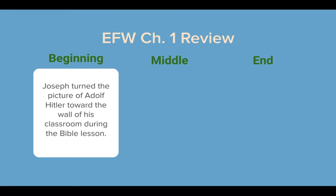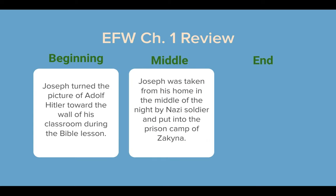Remember somebody turned him in, and that's what led to what happened in the middle of the chapter — that's when the stormtroopers broke into his home in the middle of the night and dragged him away from his wife and his children, and threw him in the prison camp at Zakina. He stayed there at least two winters because it talked about how he was sick both of those winters. He tried to escape one time but was caught, and all he really wanted to do was get out and reunite with his family.